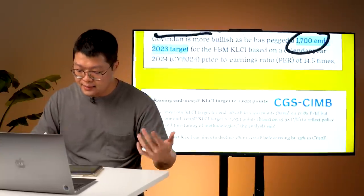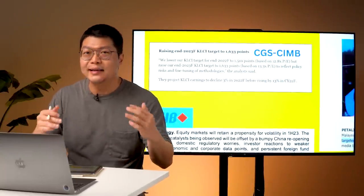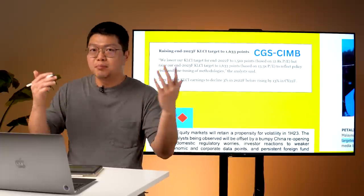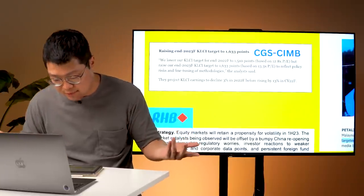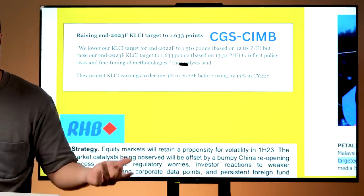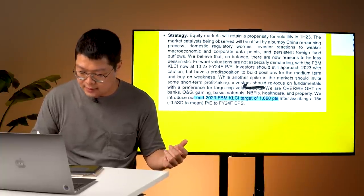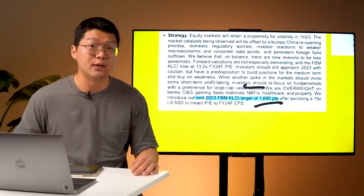If you look at slightly bigger banks like CIMB and RHB, generally they are a little bit more conservative, but not too far off from 1,700. CIMB is talking about 1,633 and RHB is talking about 1,660 by end of 2023.